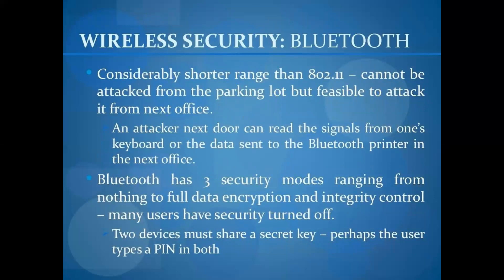Wireless security version 2.2 operates in a shorter range than 802.11, so an attack cannot be launched from the parking lot, but a feasible attack is possible from the next office. An attacker next door can view signals from one's keyboard, and data sent to a nearby printer in the next office can be intercepted.